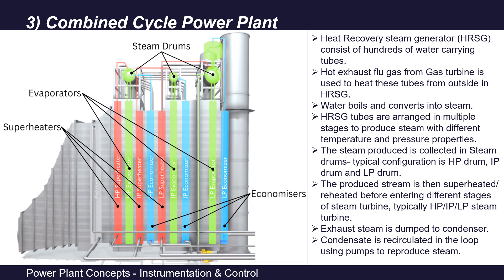The flue gases from the gas turbine exhaust are passed through the heat recovery steam generator (HRSG). The HRSG consists of many — basically hundreds of — water-carrying tubes. Outside the tubes, the hot exhaust flue gases are passed, thus the water gets heated and converted into superheated steam. This superheated steam is then used to rotate the steam turbine blades, which is connected to the generator rotor shaft, and electricity is produced.